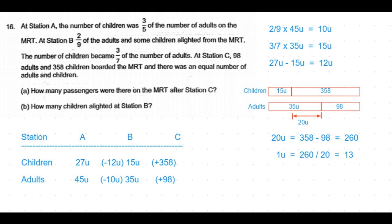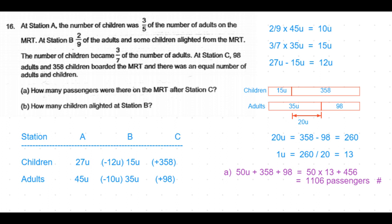Now that one unit equals 13 passengers, we can answer Part A: how many passengers were on the MRT after Station C? Children: 15 units + 358. Adults: 35 units + 98. Both are equal, so the total is 50 units plus 358 plus 98, which is 50 units plus 456. That gives 50 × 13 + 456 = 650 + 456 = 1106 passengers. That's the answer for Part A.